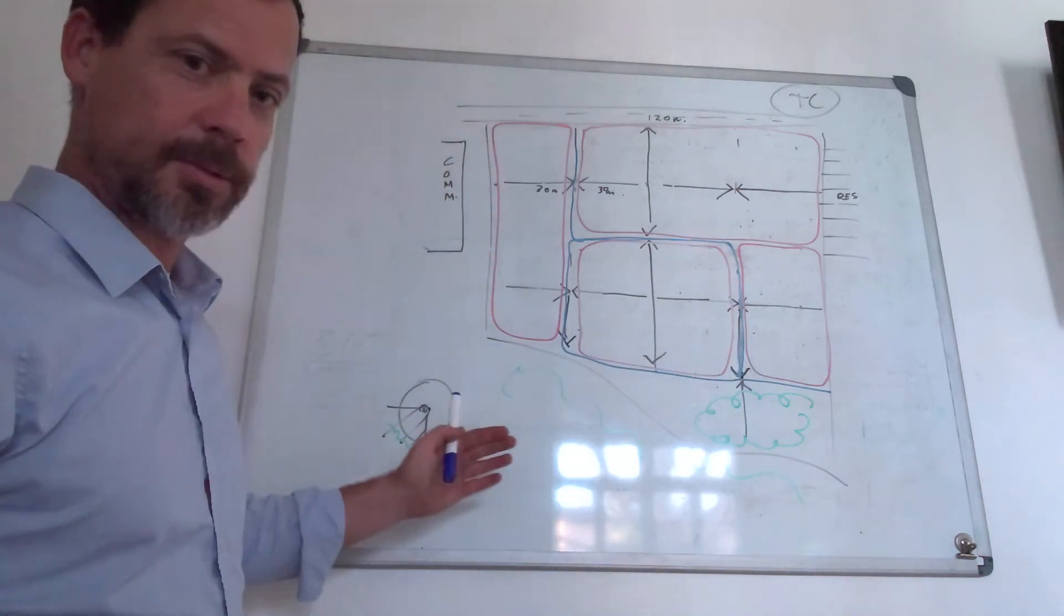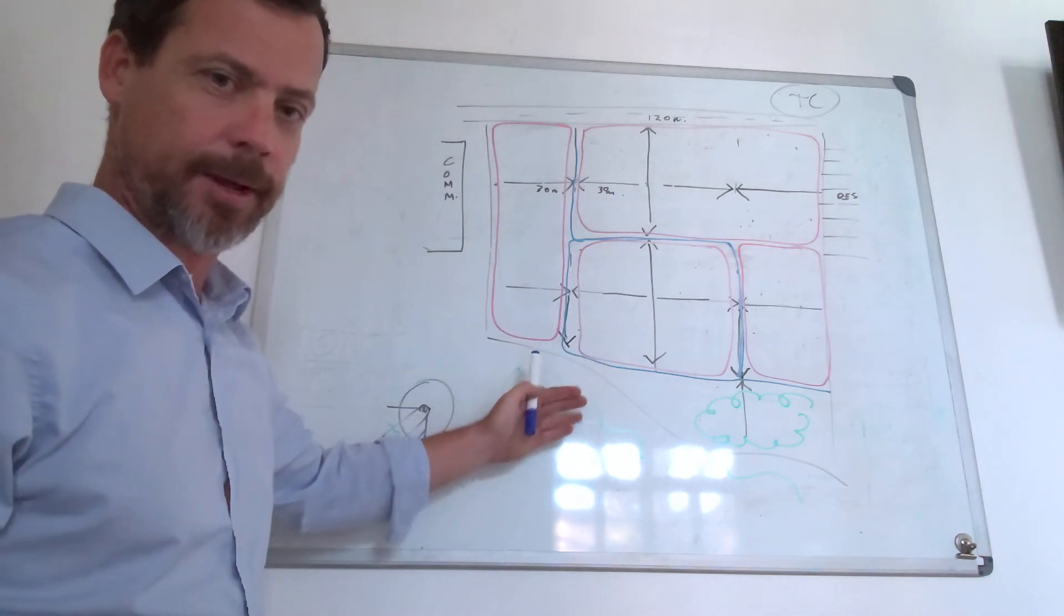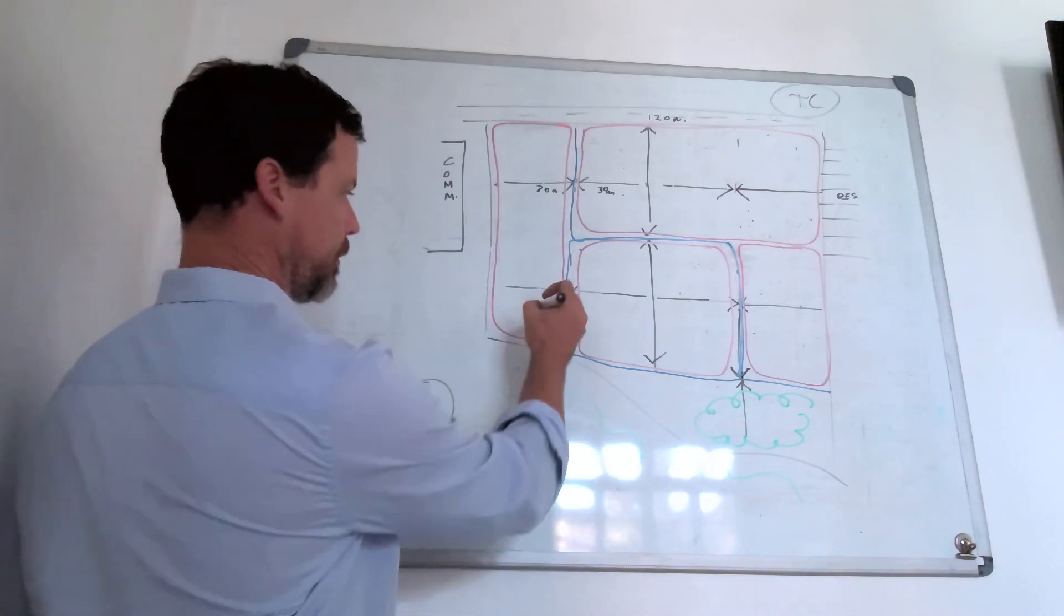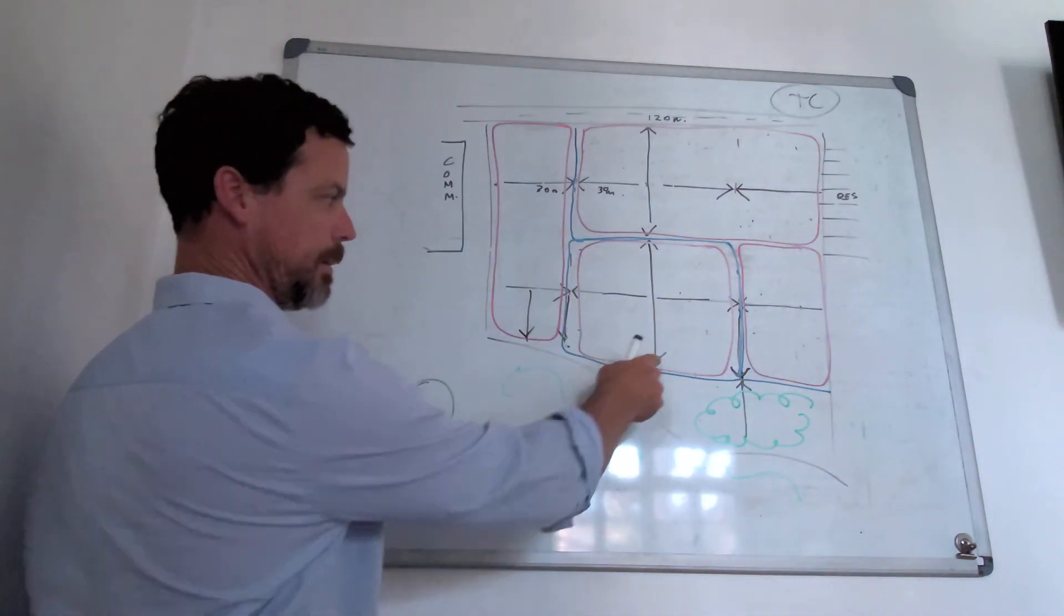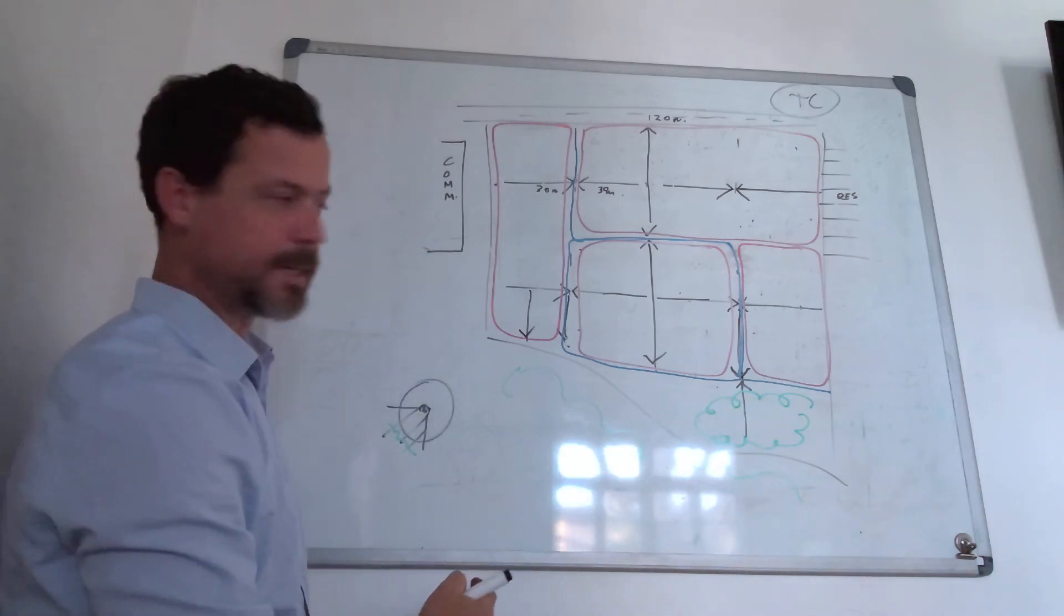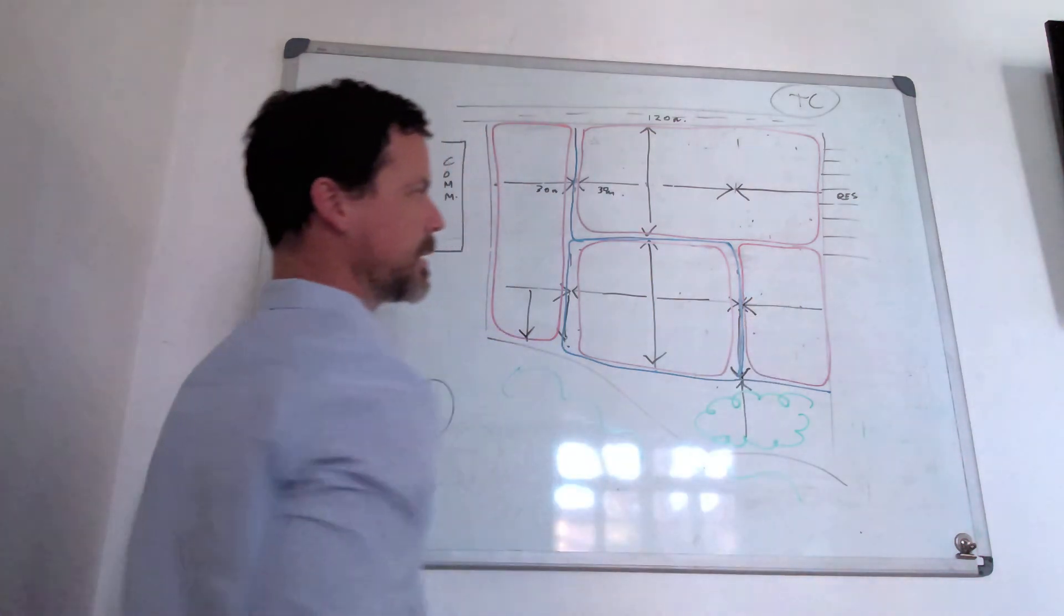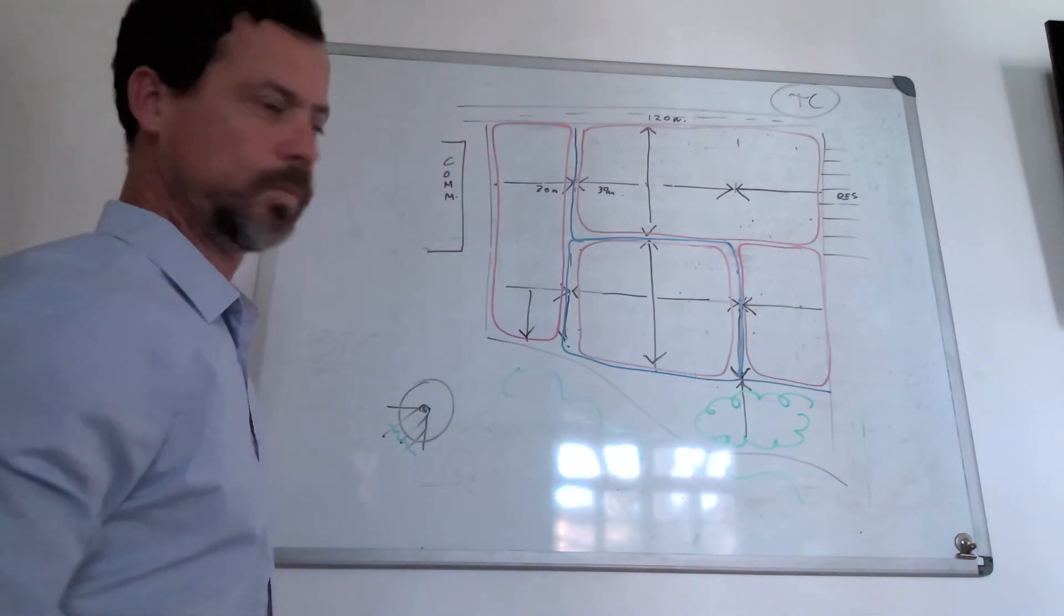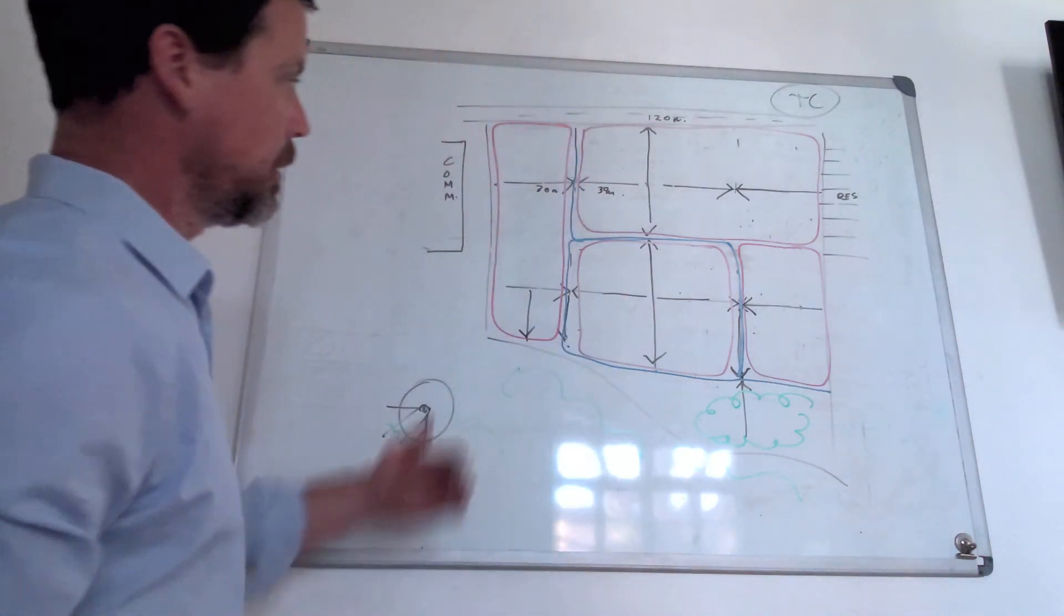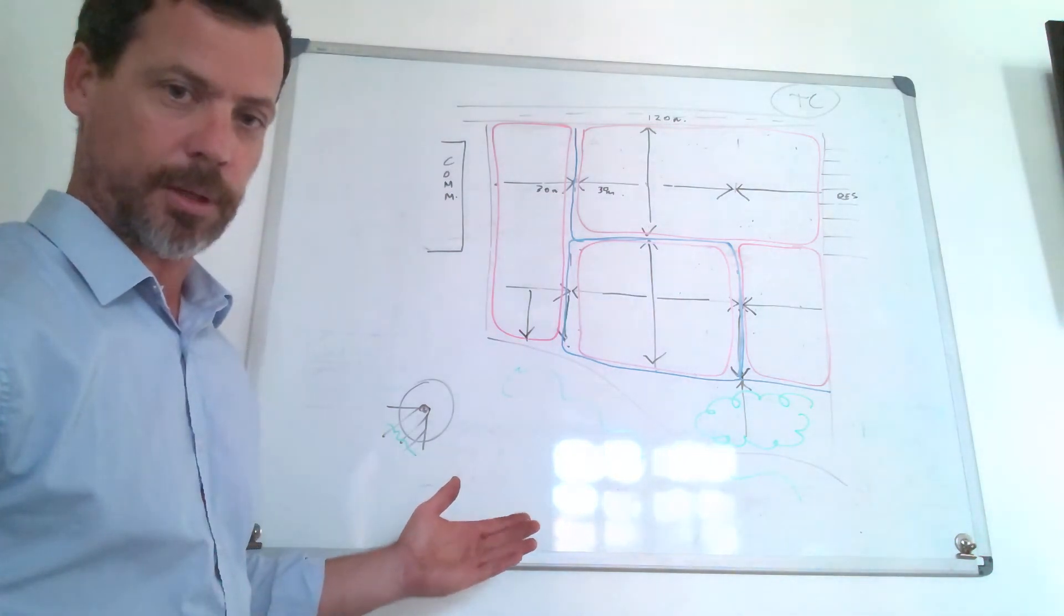And the arrows will tell you where you want your houses to face within those blocks. So here, this arrow here, front facing down onto the green space area, facing away from the residential. So once you have your blocks, you can then start planning for your allotments.